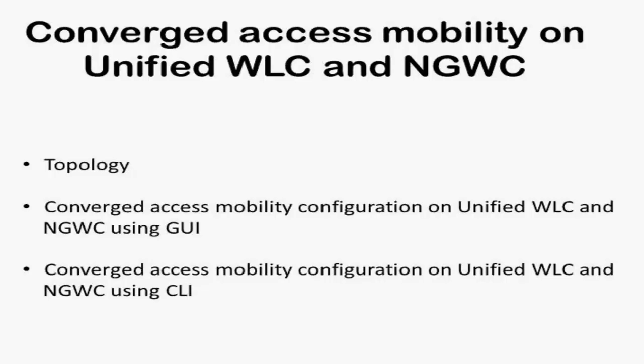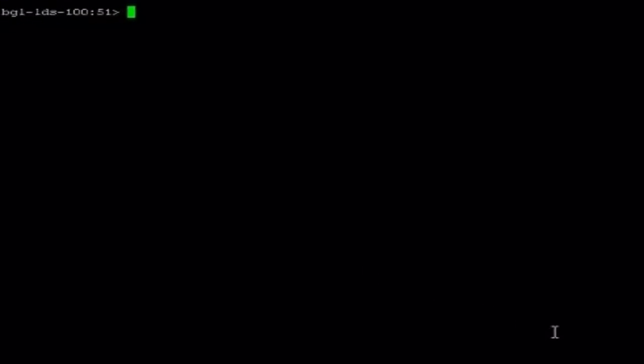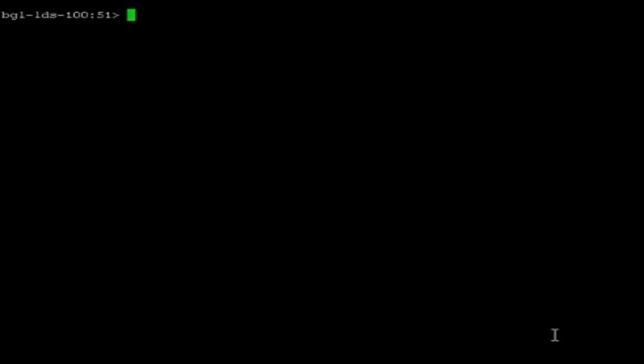Before we move to the topology section, let's see how to enable new mobility architecture on unified wireless LAN controllers using CLI. Let us have another look at the topology. I am going to make the same configuration through command line interface. This is my Linux server. I am going to use this to connect my console sessions. I have set simple aliases like MC1, MC2, MA1, MA2, MA3 to connect my console sessions. I am logging into my MC1, which is a mobility controller one, the 5500 controller.